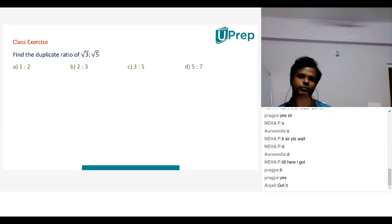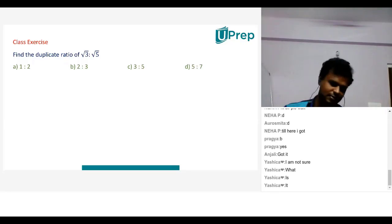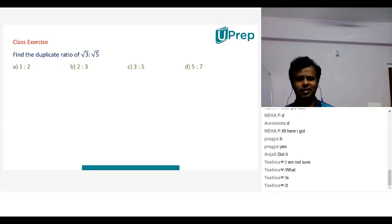Children duplicate ratio. What will be the duplicate ratio? What do you mean by what? Yeshika? What's happening? We have seen the definitions right children. We have seen duplicate ratio, sub duplicate ratio, triplicate ratio, sub triplicate ratio. Yes or no?